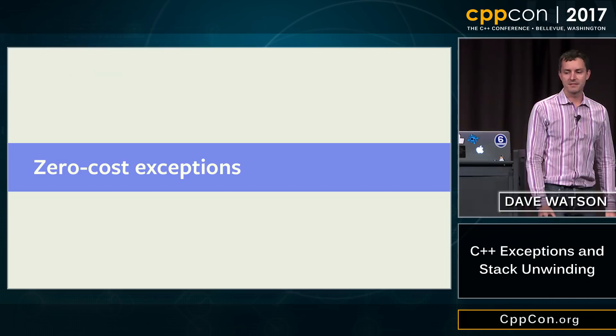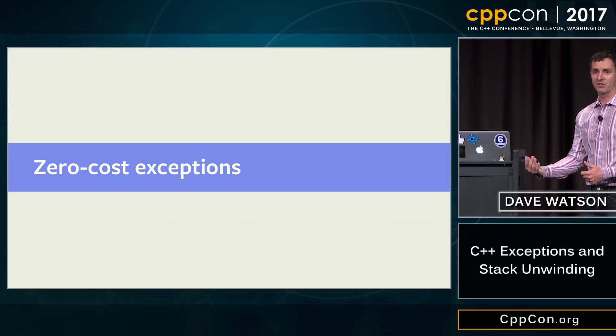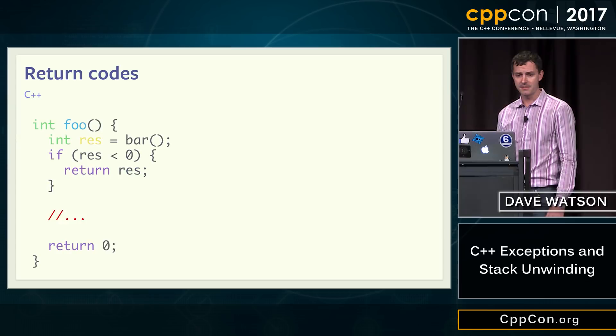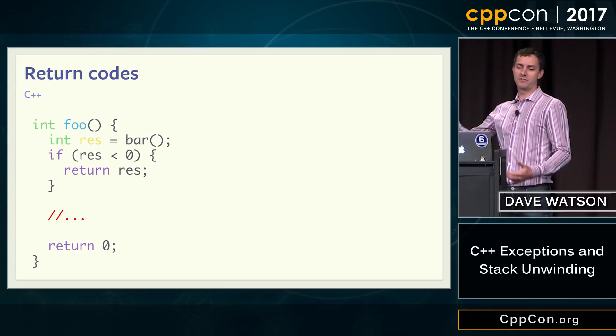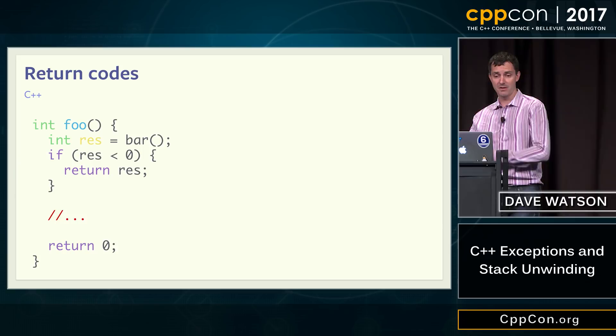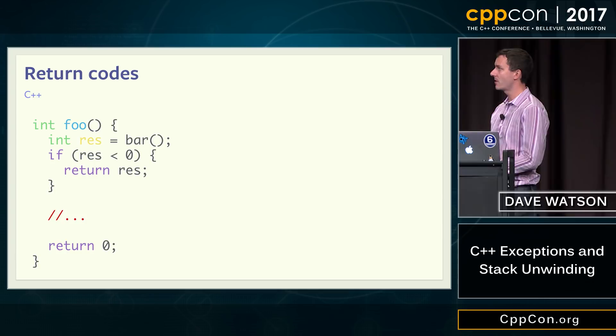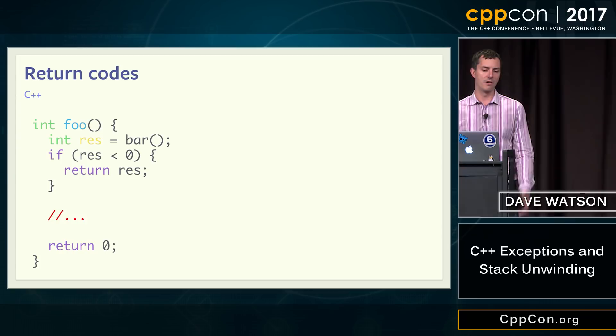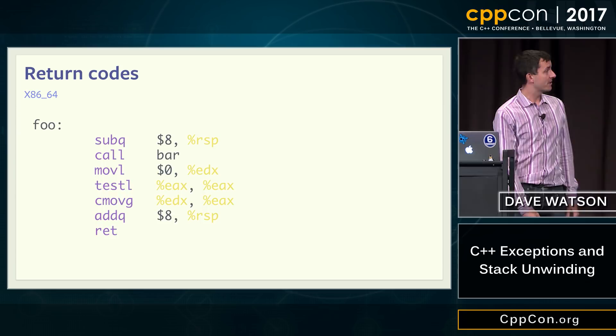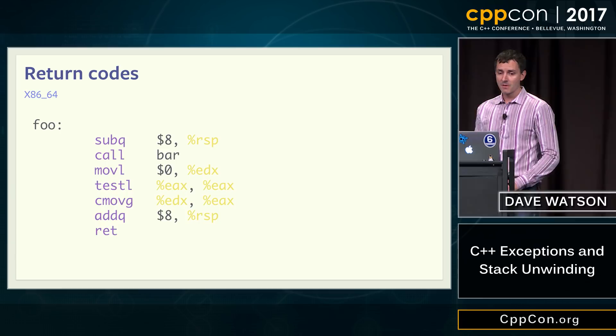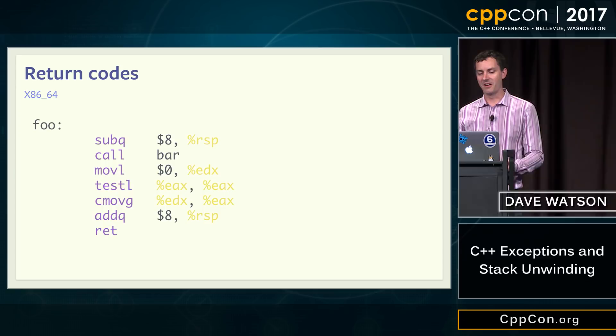Zero-cost exceptions: if we don't use exceptions or don't throw, we're not paying any cost for having exception handling in the code. Comparing to return codes — here's a simple example of a function that calls another using return codes. Bar returns a return code; we check if it's less than zero, assume that's an error, and propagate it up the stack. Otherwise we do some real work and return a different return code. Generating the assembly: a stack adjustment, the function call, some tests, an adjustment and return. Pretty straightforward — seven or eight instructions.